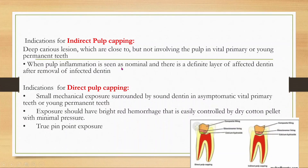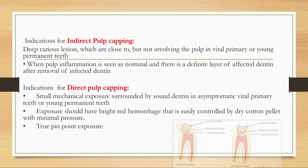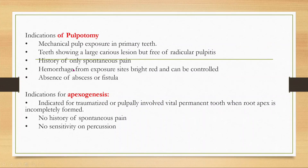Direct pulp capping is indicated when there is a small mechanical exposure surrounded by sound dentine in asymptomatic vital primary teeth. The exposure should have bright red hemorrhage — not dark red, which indicates a deep lesion — that can be easily controlled by a dry cotton pellet with minimal pressure. Through a pinpoint exposure, we can do direct pulp capping. Indications of pulpitomy include: mechanical pulp exposure in primary teeth, large caries lesion but no radicular pulpitis, only spontaneous pain, bright red hemorrhage from exposure site that can be controlled.